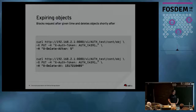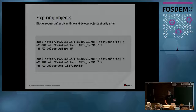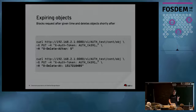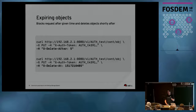Expiring objects is another useful feature. When you upload an object, you can specify a time after which the object becomes unavailable — either as seconds from now or as a Unix epoch timestamp. In the background, Swift will immediately stop returning the object after the time expires, and a background process then actually deletes the object from the cluster.